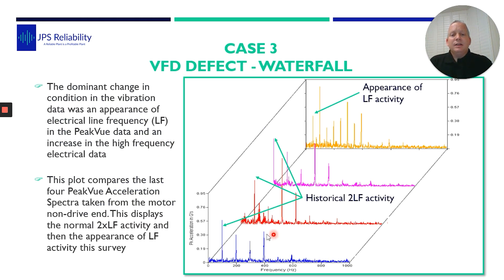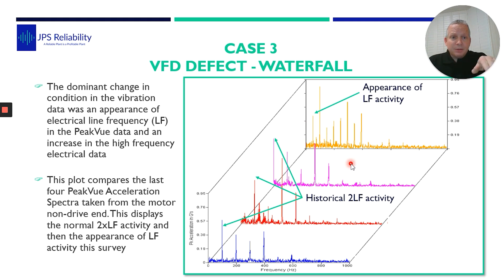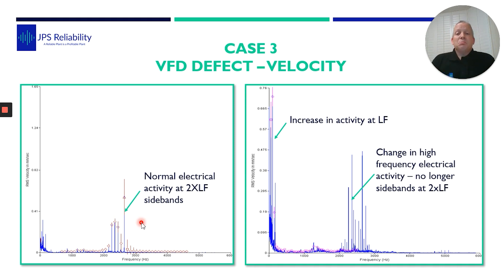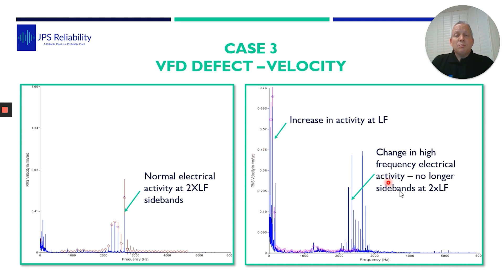Looking at the vibration data, the historical data shows the two-times line frequency. On this particular survey, we suddenly had an appearance of a one-times line frequency at 25 Hz, which is really abnormal — this is the peak view data. Comparing the velocity levels, they actually came down, but the two-times line frequency is what you'd normally see. On this survey, we had a large increase at 25 Hz, and the electrical mount was now side-banded by 25 Hz. So the vibration had increased, and there was a clear change in the pattern and condition.